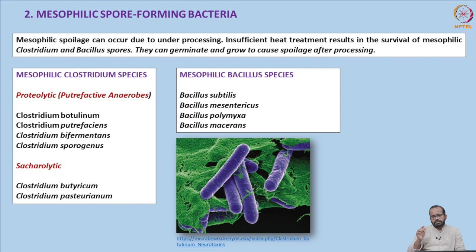Mesophilic Bacillus species targeting low acid canned food include Bacillus subtilis and B. mesentricus (targeting seafood, meat, milk) and B. polymyxa and B. macerans (targeting fruits and vegetables). Mesophilic spores are less resistant than thermophilic spores. That is why thermophilic microorganisms — mostly spoilage organisms — are not targeted, while mesophilic pathogenic microorganisms are more targeted in thermal processing design.